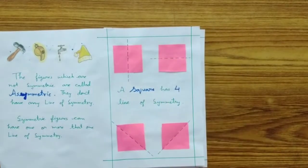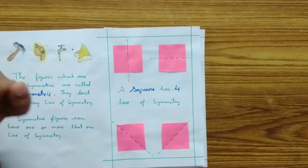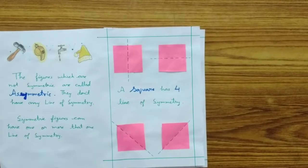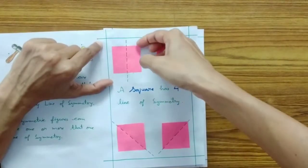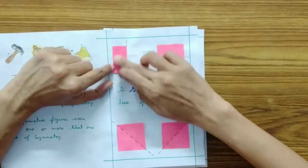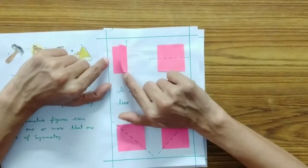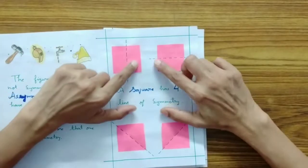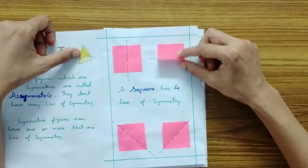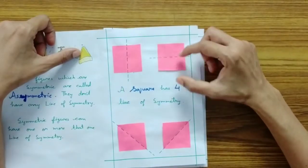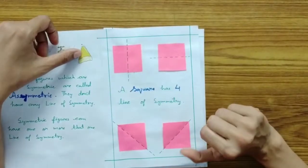This is a square and a square has four lines of symmetry. If we fold along a line of symmetry, both the parts must overlap. Let us fold this square along the vertical line — you can see that both the halves are overlapping each other. Similarly, for the horizontal line, both the parts are overlapping each other. So these two lines are lines of symmetry.